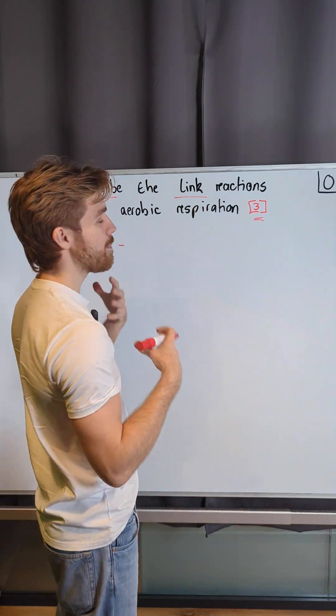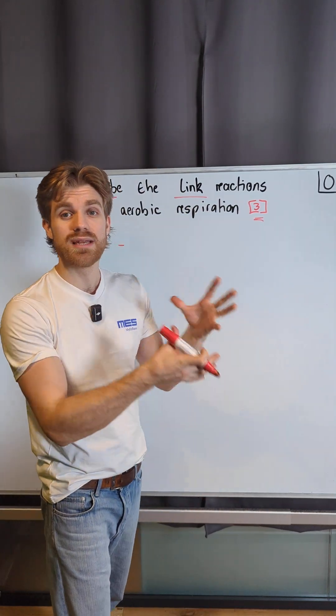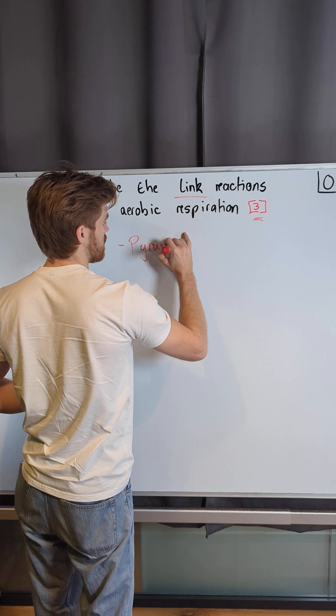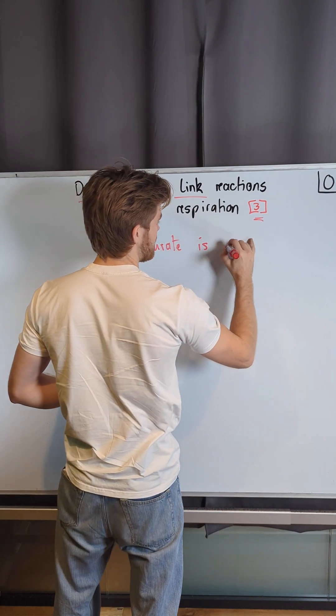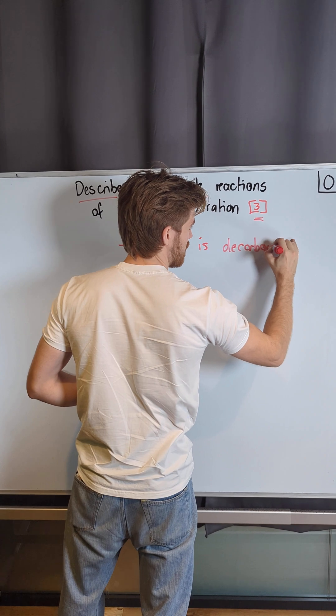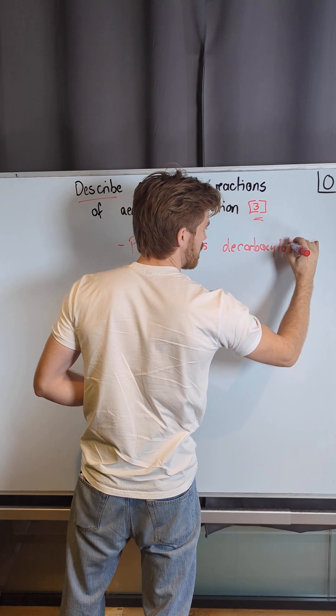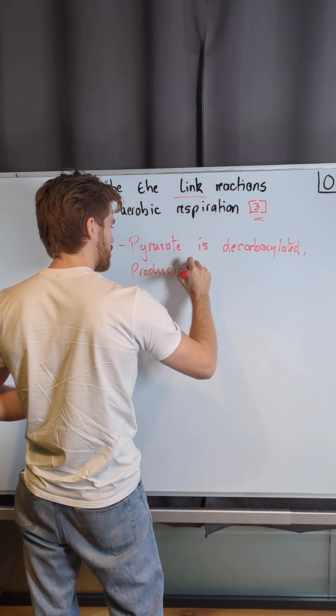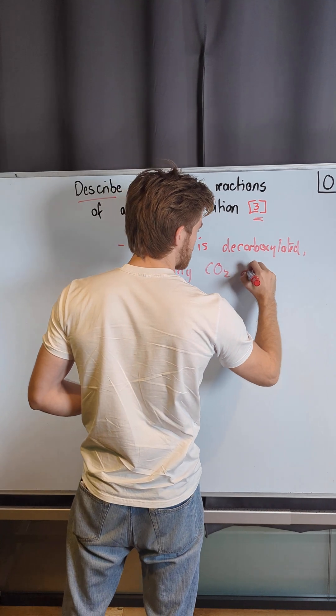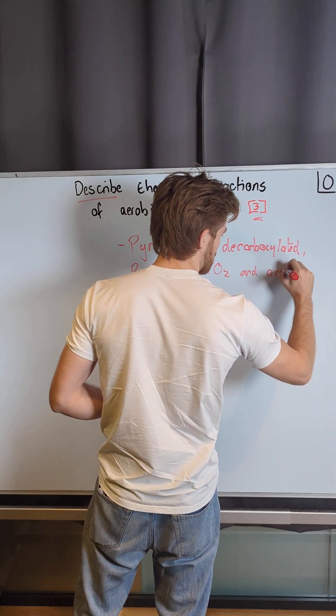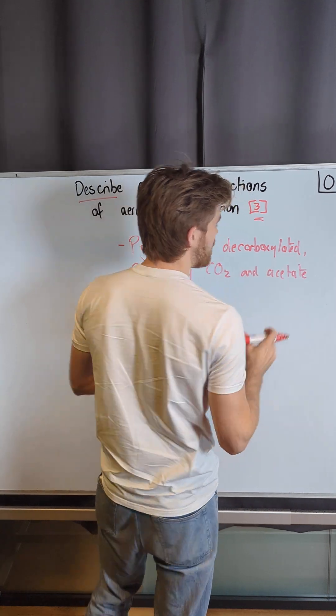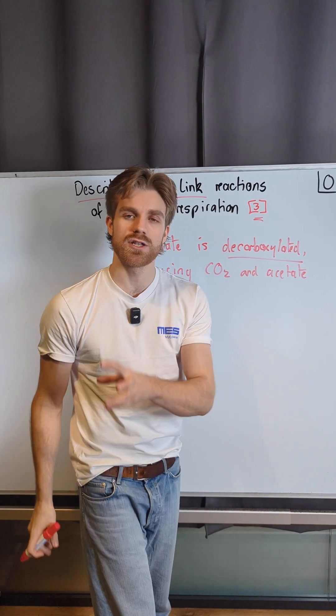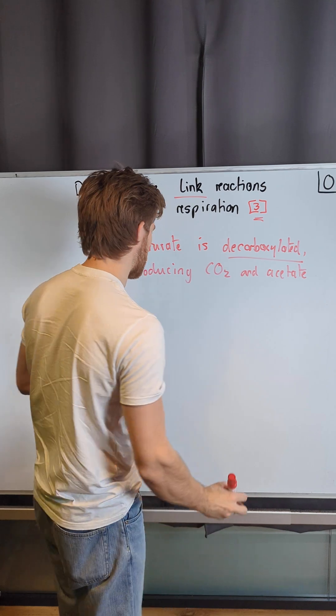So the first thing, the pyruvate is going to be decarboxylated. So pyruvate is decarboxylated and this produces carbon dioxide and acetate. This is what the examiner wants you to do. They want you to refer to the type of reaction, so this is a decarboxylation reaction.